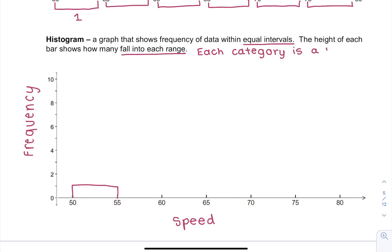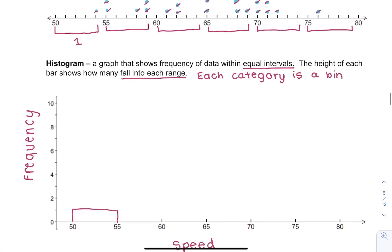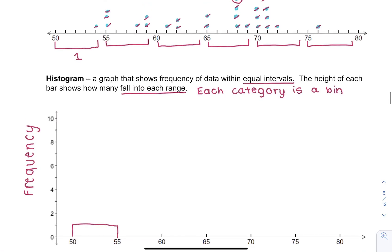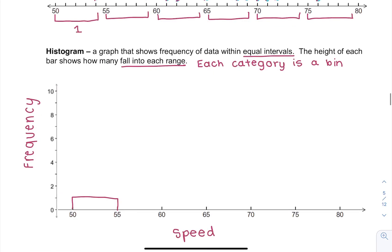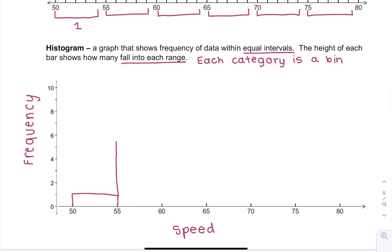So in this first bin I only have one data point, but I don't know whether it was 50, whether it was 51, but it was actually 54, but this data actually doesn't show that. Next up I have from the 55 to 60 range, so one, two, three, four, five, six, so I'm going to make my frequency at six.